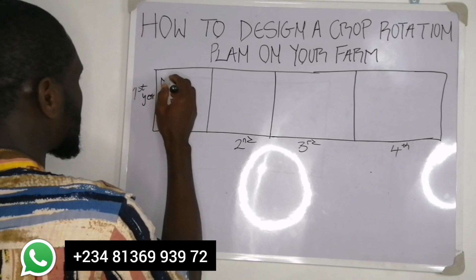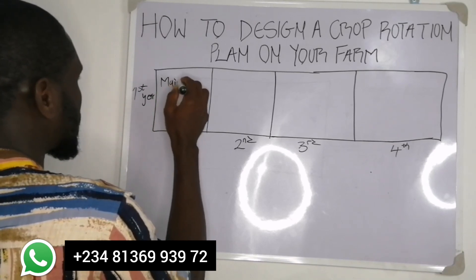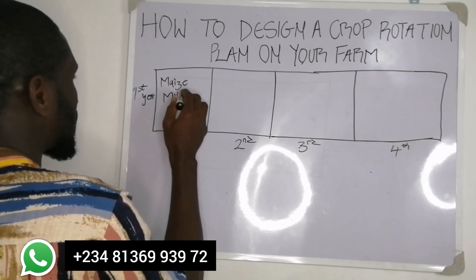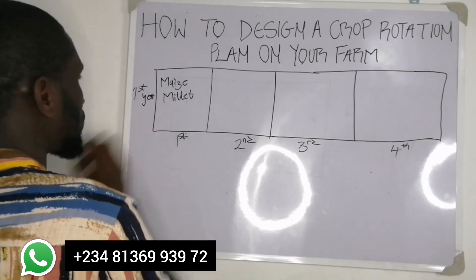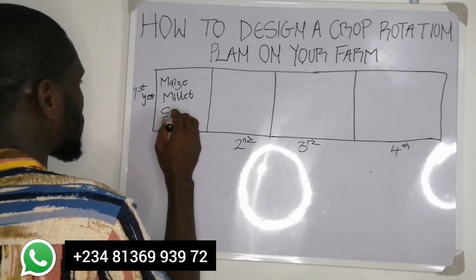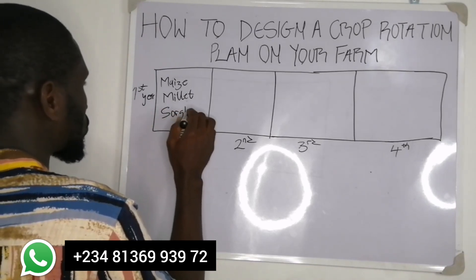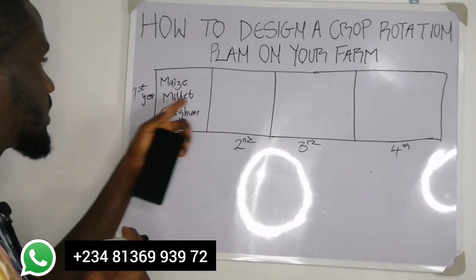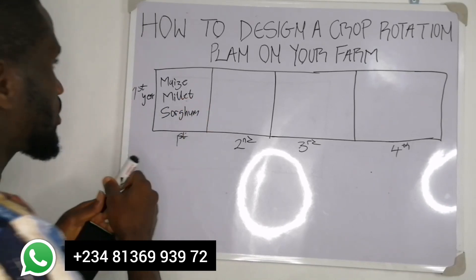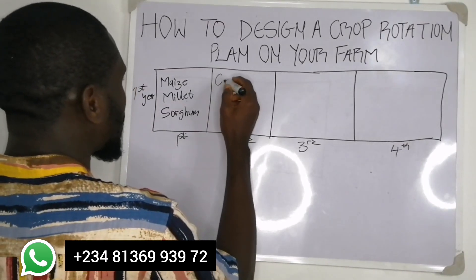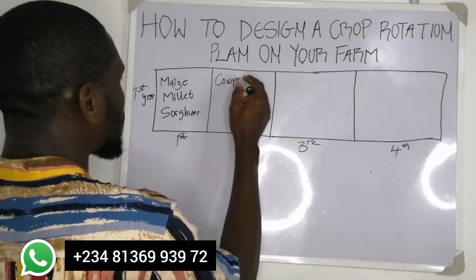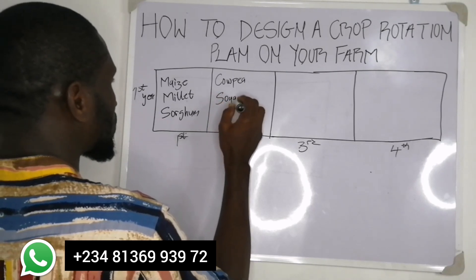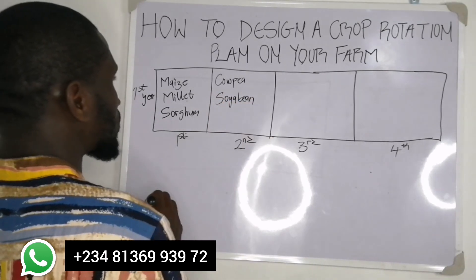In the first plot, in the first year, let's say you plant maize, millet, or sorghum. Then what will follow in the second plot in the first year will be something like cowpea, soya bean, or melon — leguminous crops.